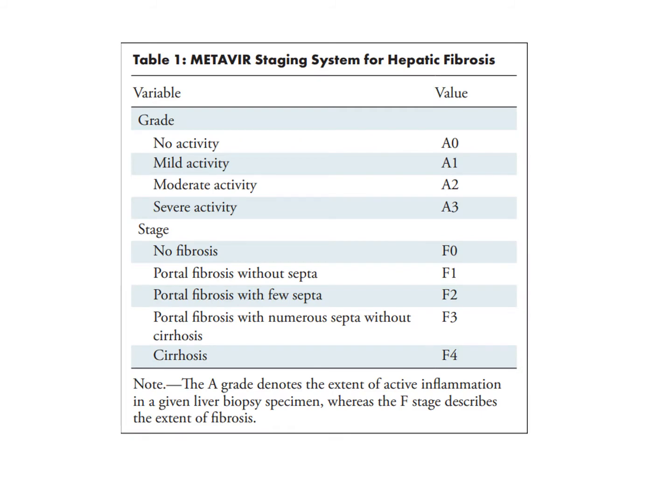This is the METAVIR staging system for hepatic fibrosis, classified into two parts: the grade and the stage. The A grade denotes the extent of active inflammation in a given liver biopsy specimen, while the F stage describes the extent of fibrosis, ranging from F0 to F4, with increasing severity — F4 being the final cirrhosis stage.